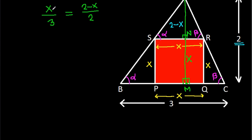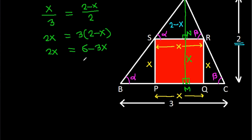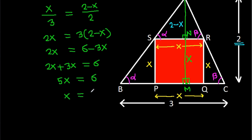If we cross multiply, then SR is X and AN is 2 minus X, so 2 times X equals 3 times (2 minus X). So 2X equals 6 minus 3X. Therefore 2X plus 3X equals 6, giving 5X equals 6, so X equals 6 by 5.